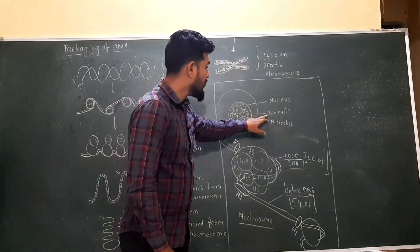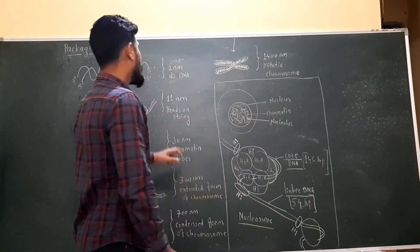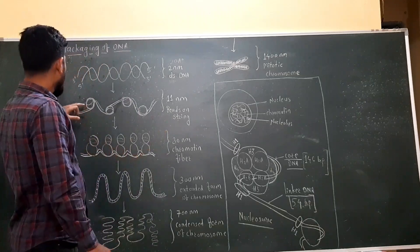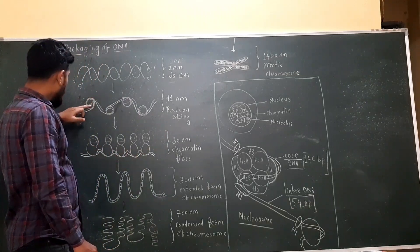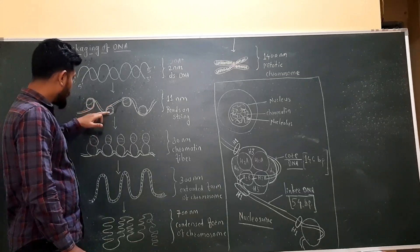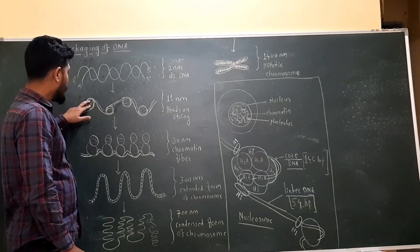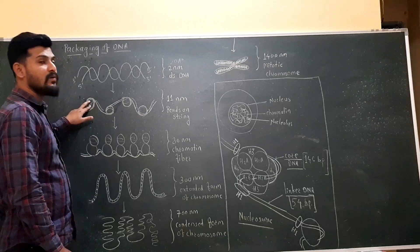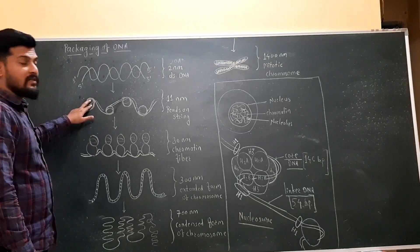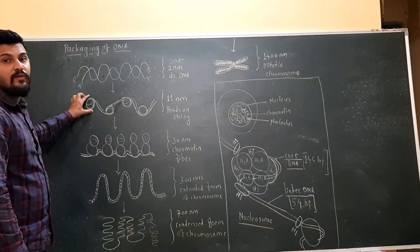These chromatin materials appear as beads on string. Beads on string means the DNA is wrapped around the histone protein. The histone proteins and the DNA form the basic unit of this beads-on-string model. These basic units are called as the nucleosomes.